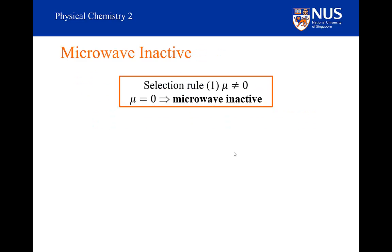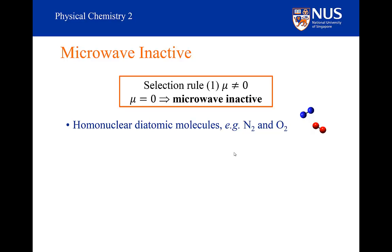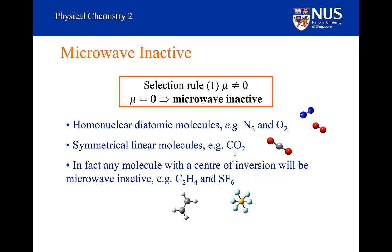The first selection rule is that the dipole moment mu must be non-zero. If it is zero, we won't see a microwave spectrum — we call it microwave inactive. Diatomic molecules which do not have a dipole moment are the homonuclear diatomics such as dinitrogen and dioxygen. Also, symmetrical linear molecules such as carbon dioxide do not have a permanent dipole moment and will not show a microwave spectrum. Any symmetric molecule such as sulphur hexafluoride and ethene would also be microwave inactive. Symmetry tells us whether a molecule is going to be microwave inactive.